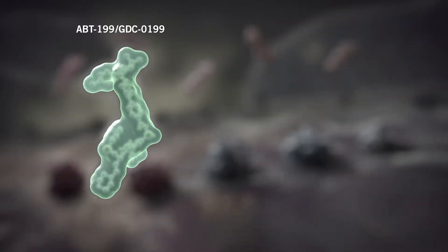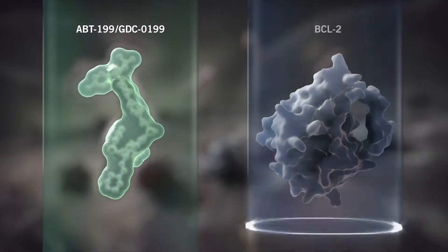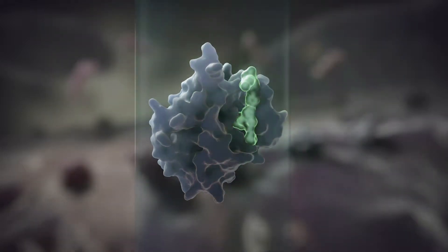ABT199 or GDC0199 is a small molecule designed to selectively bind and inhibit BCL2, a critical regulator of apoptosis.